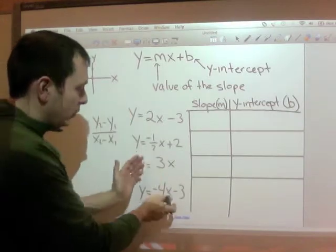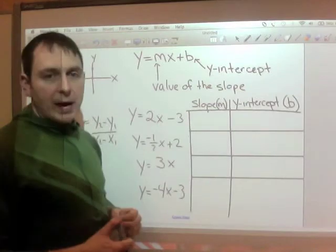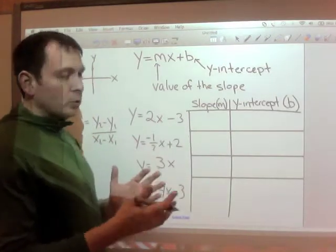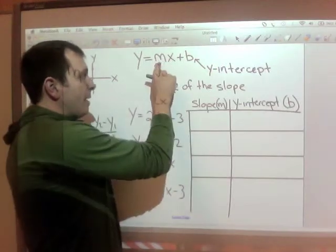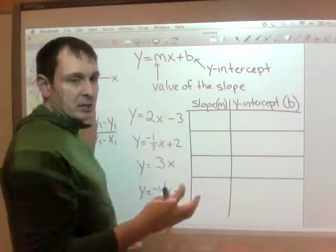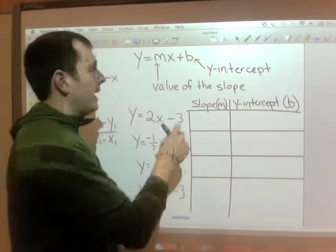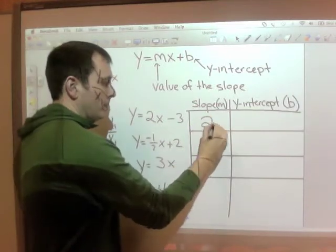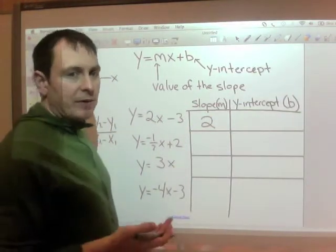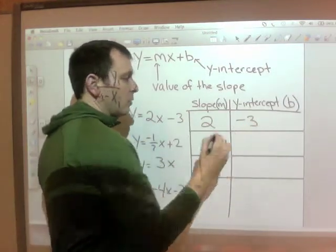So looking at an equation, you should be able to name where the slope is or the value of the slope, where the y-intercept is. And from those two pieces, you should be able to graph any line. So m or the part that's with the x is the slope. If it's rearranged, that's okay. The part with the x is the slope. So 2 is our slope and the y-intercept is the value by itself. Negative 3 is our y-intercept.